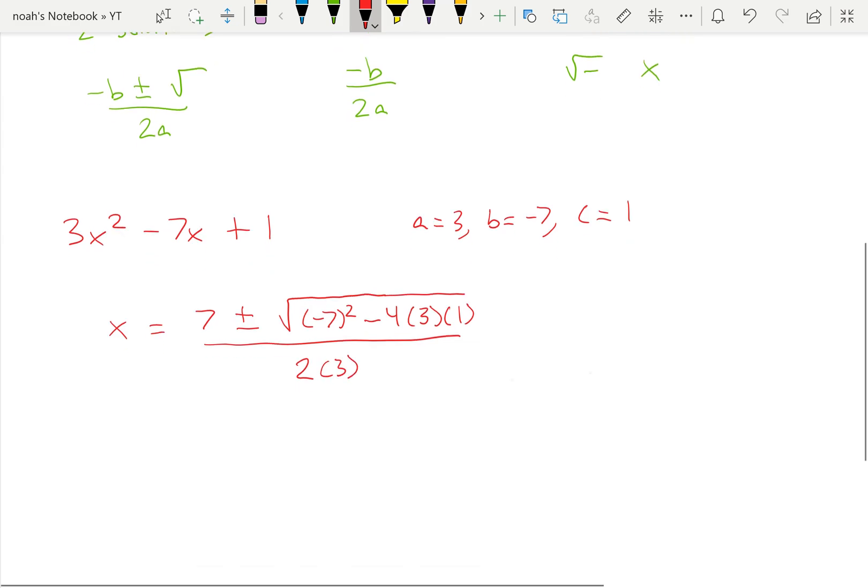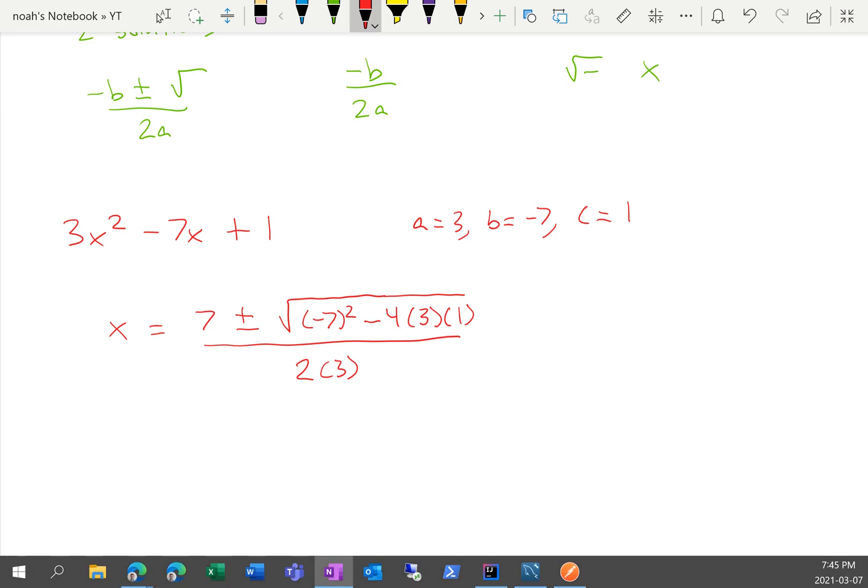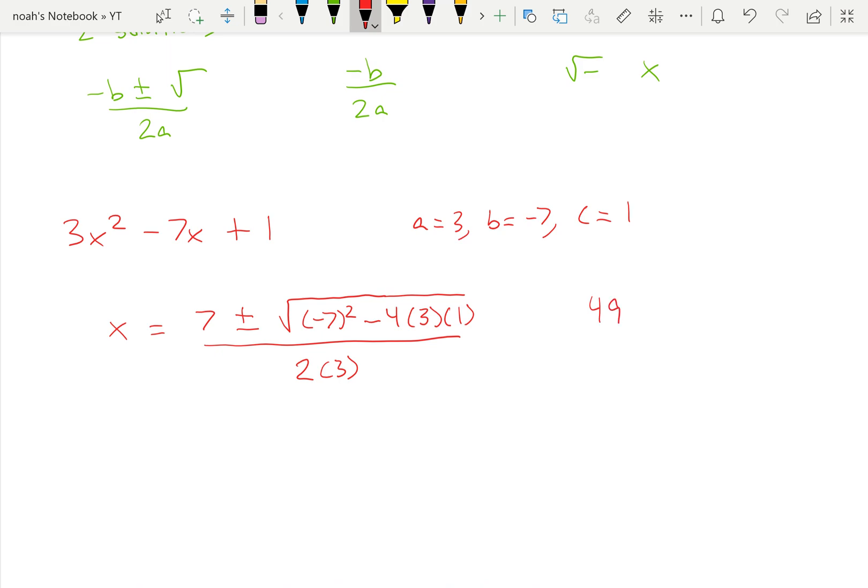And we can see here the determinant, which is 49 minus 12, which is 37, is greater than 0. So we've got two solutions, and we can continue solving.